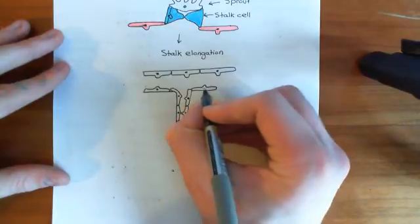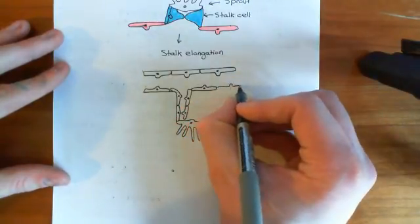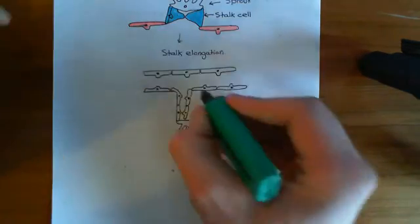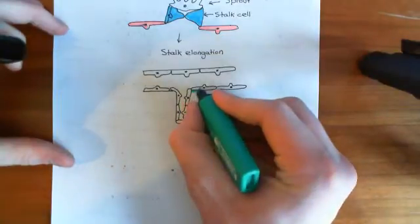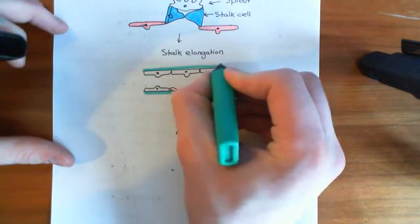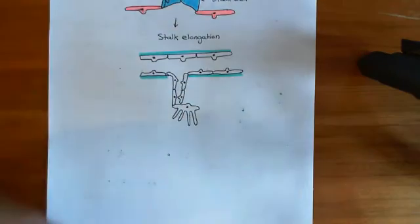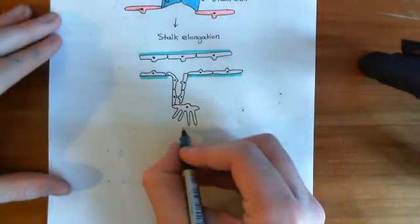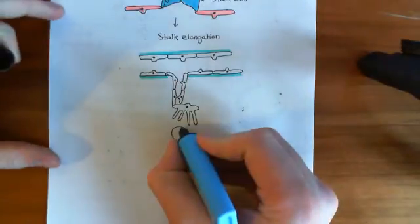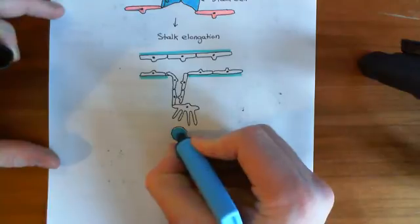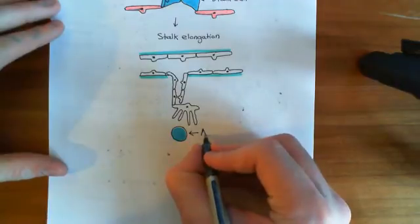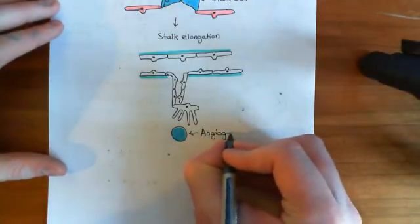These are the endothelial cells continuing on the rest of that capillary. Then I'll add in a basement membrane where there is one — there'll be a basement membrane here and here, but there'll be a hole in the basement membrane at the stalk. This stalk is navigating towards the angiogenic centre, which I'll colour in blue. Here is the angiogenic centre releasing vascular endothelial growth factor A.